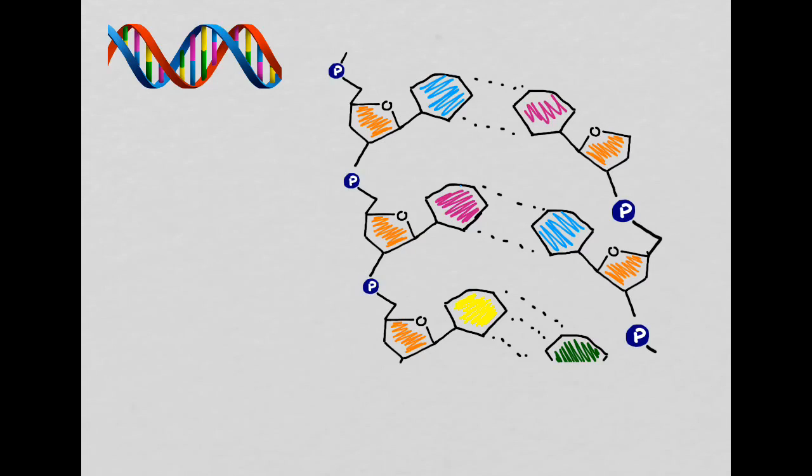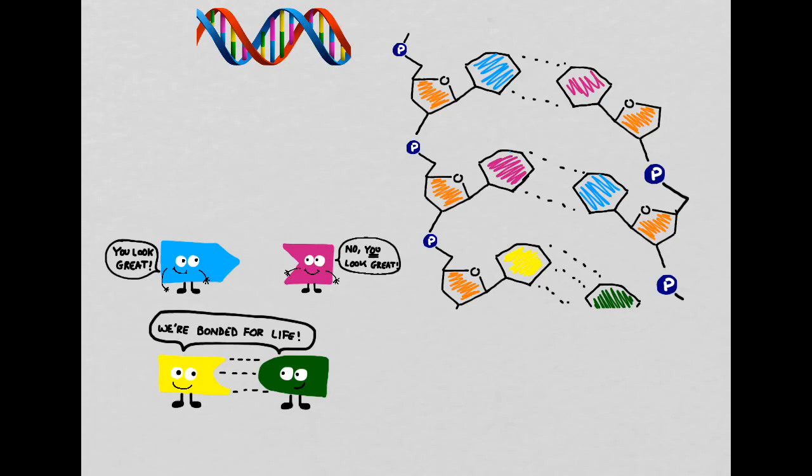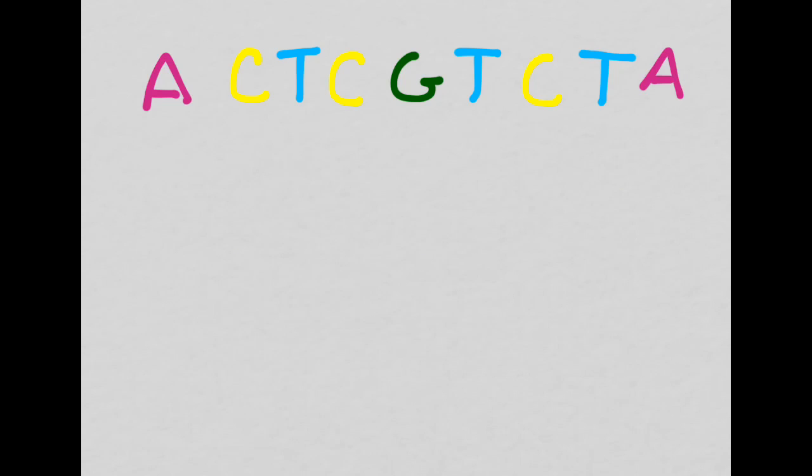DNA is made up of phosphorus, sugars, and nitrogen bases, which are A's and T's and C's and G's. Remember also that A only pairs with T, and C only pairs with G. Before we move on, see if you can figure out what the complementary strand would be for this string of nine nucleotides.